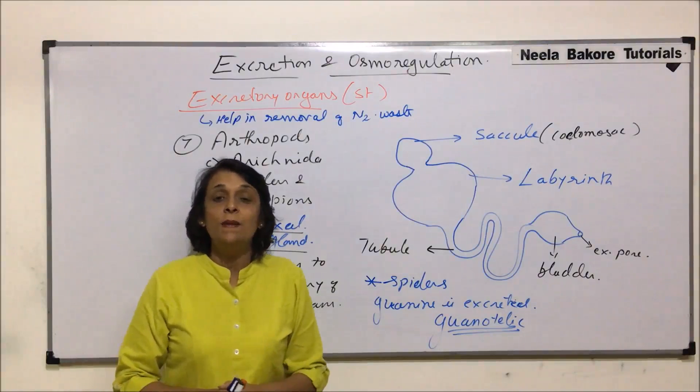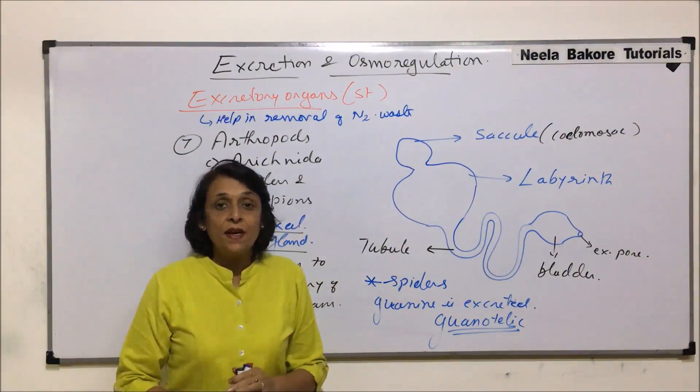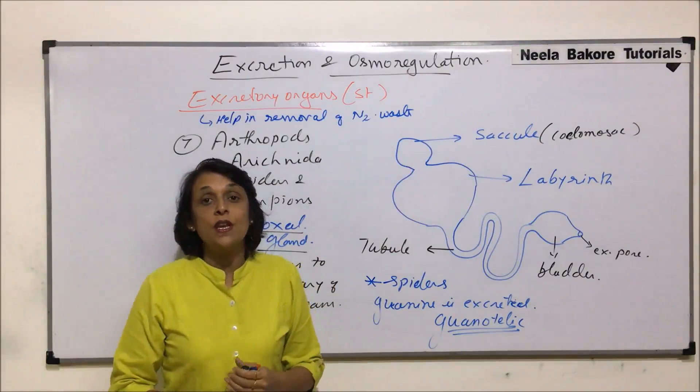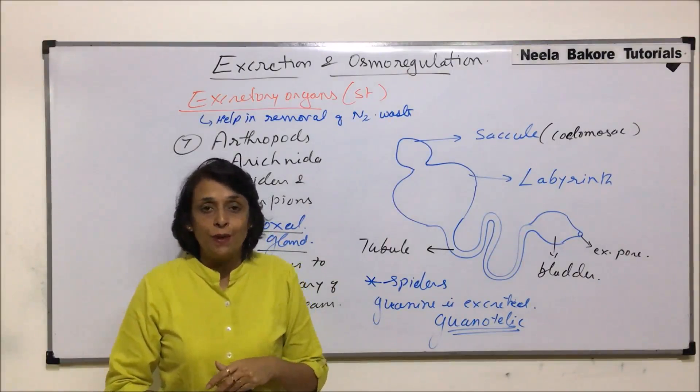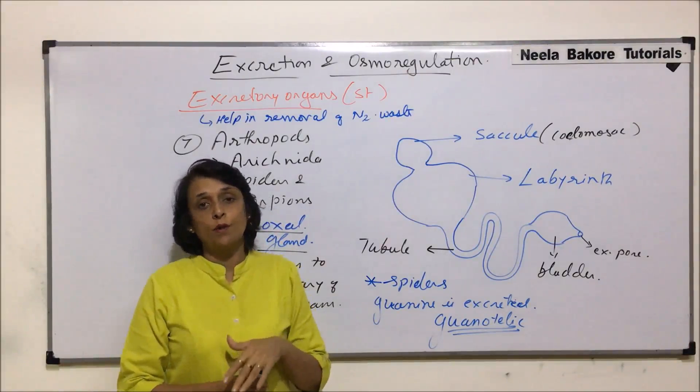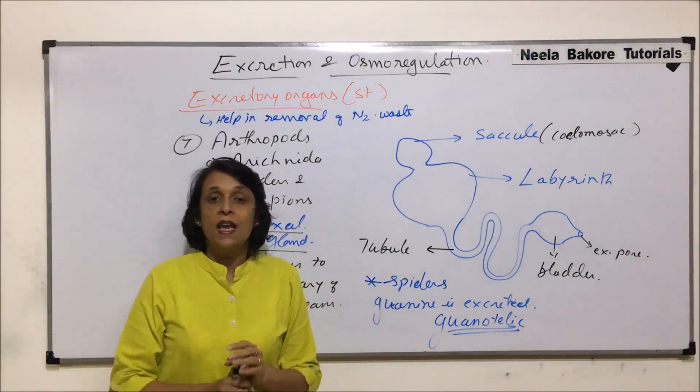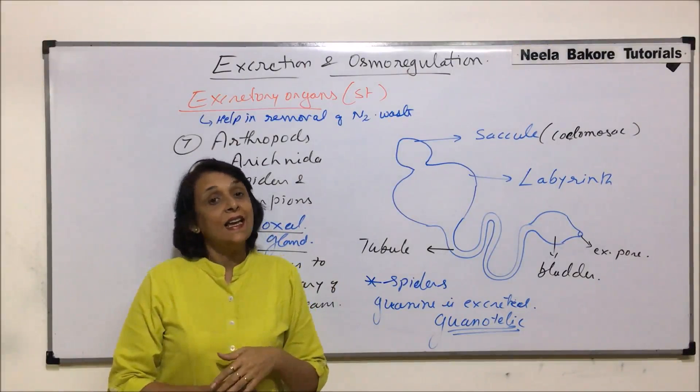We are now done with the basic excretory structures across arthropod groups. Next, we are going to take up the excretory organs in human beings or vertebrates — that is, the kidney.